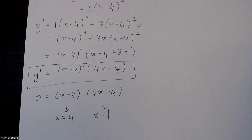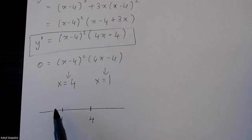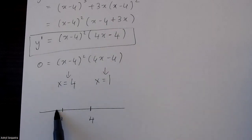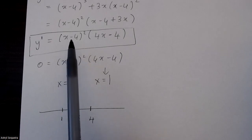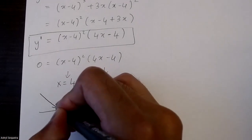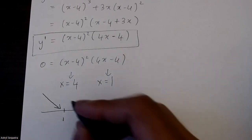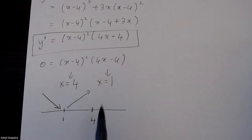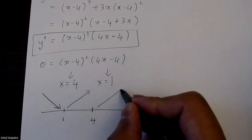I'll put these on my number line and sub in test points into the derivative to determine increasing or decreasing. Subbing in 0 gives a positive times a negative, which is negative — so decreasing. Subbing in 2 gives positive times positive, which is positive — so increasing. Subbing in 5 gives positive times positive, which is also increasing.